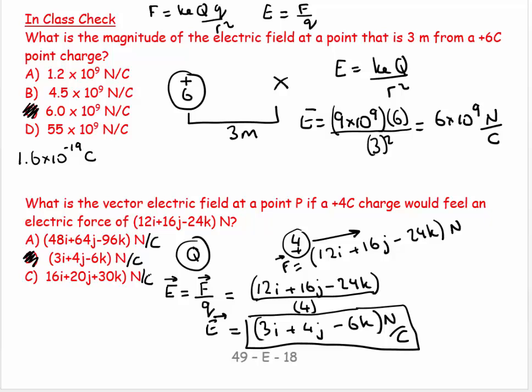So one last thing I want to say about this. Two last things. One is that F is an inverse square relationship with R. And E is also inverse square with R. So if I double my separation, if I double my separation between the charge and the point of interest, I get one quarter the electric field. If I triple my separation, I get one ninth the electric field. If I quadruple it, I get one sixteenth the electric field. So visualize that.